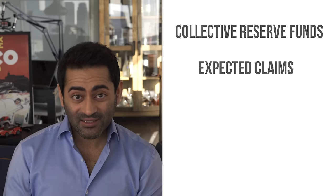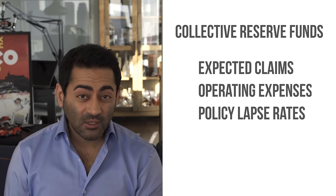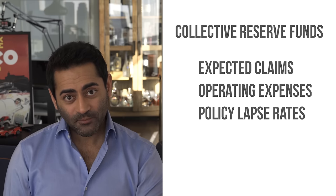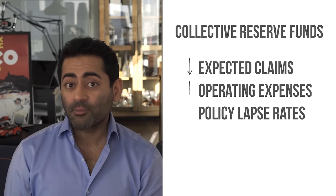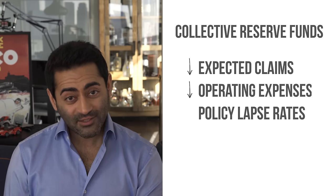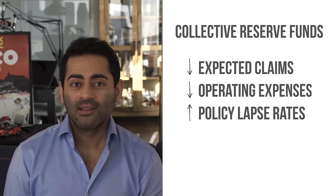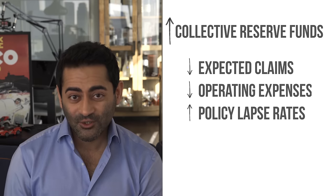There are other factors that go into these formulas, like mortality rates and expected claims, operating expenses of the insurance company, and policy lapse rates. For example, if fewer people die than predicted, if operating expenses go down over time, and if more people let their policies lapse due to non-payment, then all of these things increase the profitability of the insurance company.